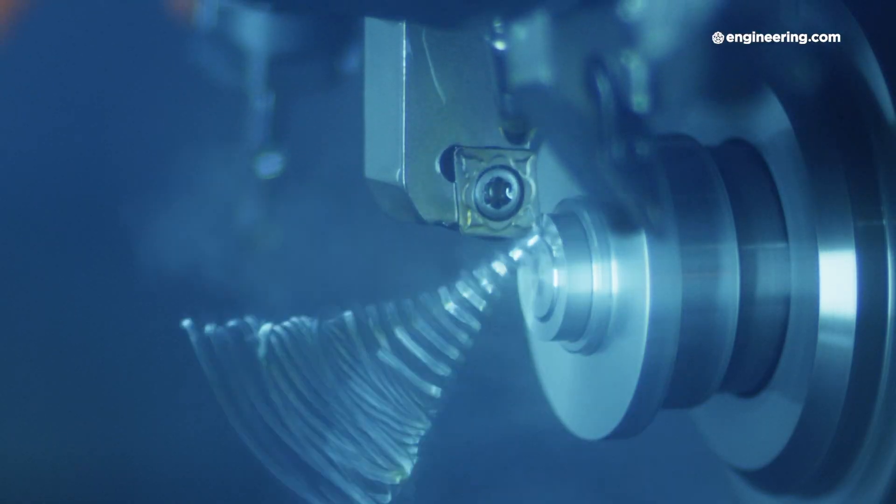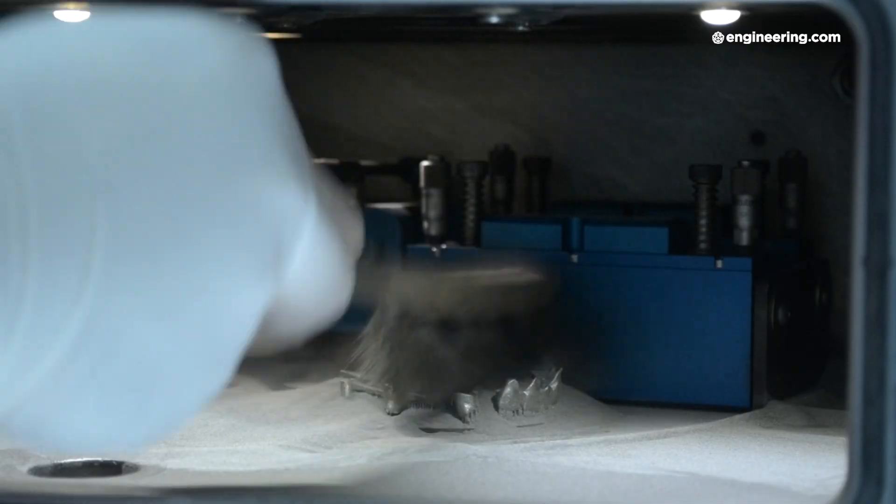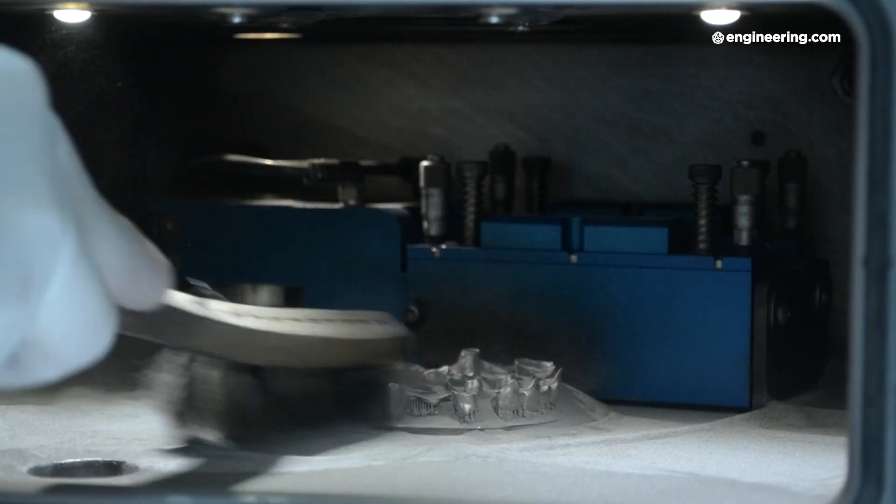Let's be clear, additive manufacturing has many advantages but the technology has weaknesses too. The process may never be able to compete with the speed and efficiency of high volume stamping for example. Materials are also a sticking point. Subtractive processes can work with nearly any alloy on the planet but the roster of metals available in the specialized powders that most metal additive processes require, well that's limited.